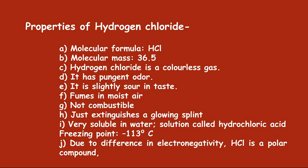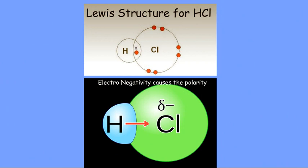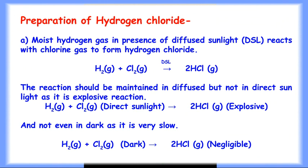Hydrogen chloride is a colorless gas. It is not combustible but fumes in moist air. It is highly soluble in water and its freezing point is minus 130 degrees Celsius. Hydrogen chloride forms a covalent bond, and due to the high difference in electronegativity between hydrogen and chlorine, it forms a polar compound.